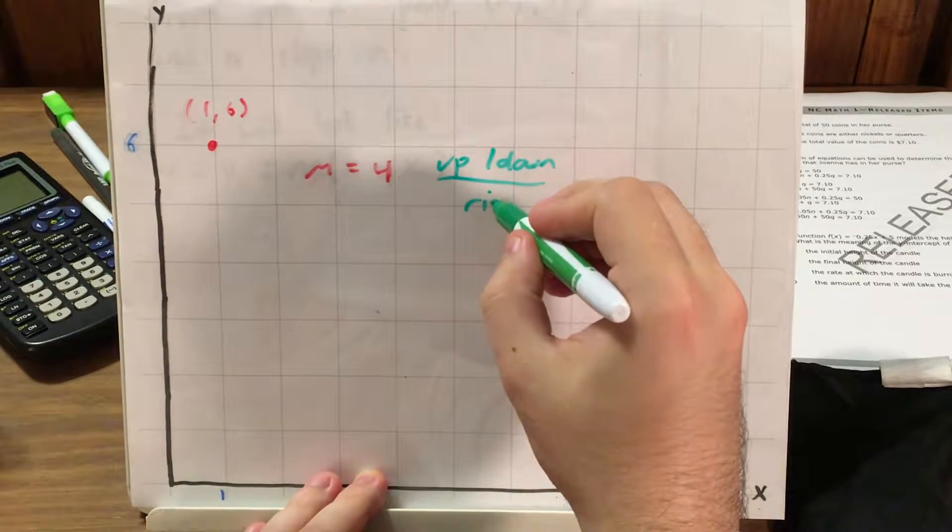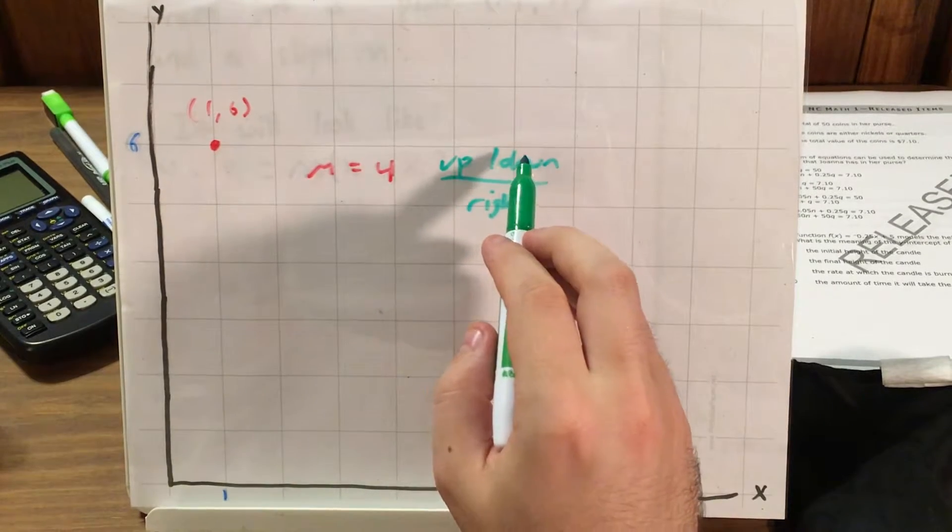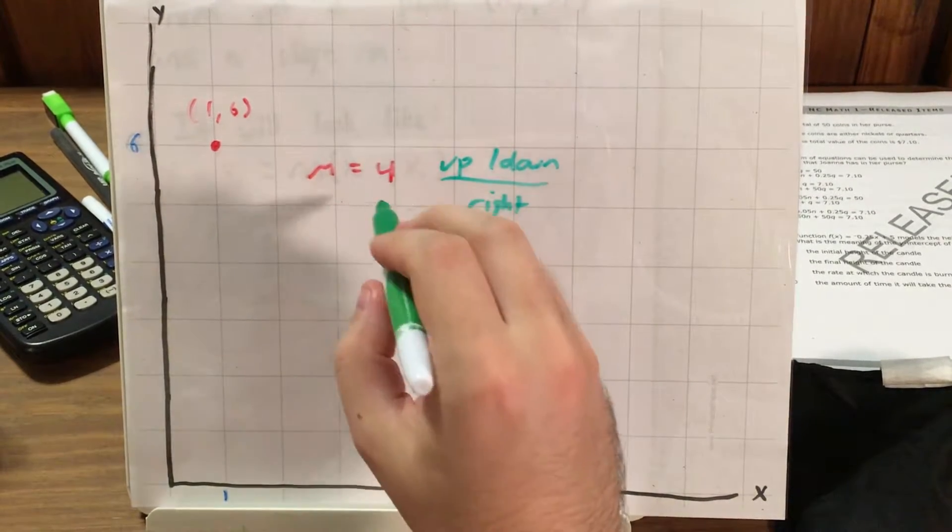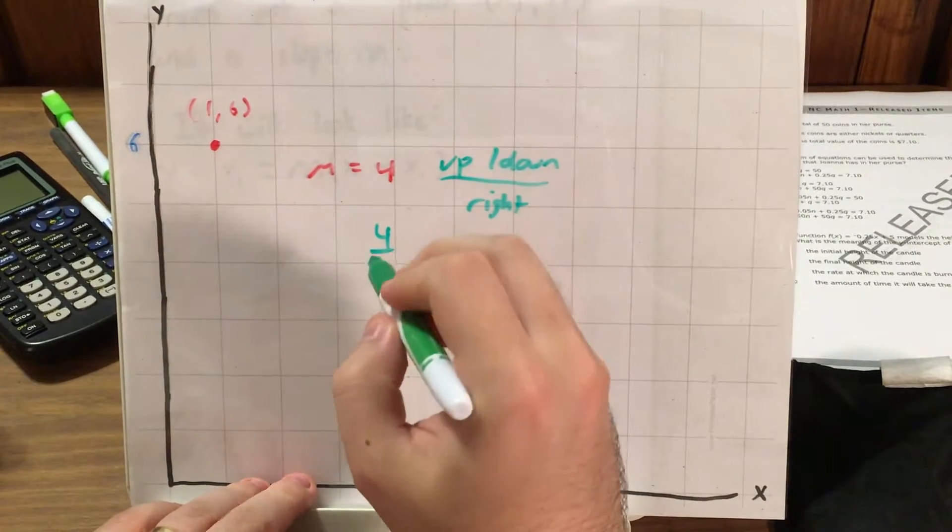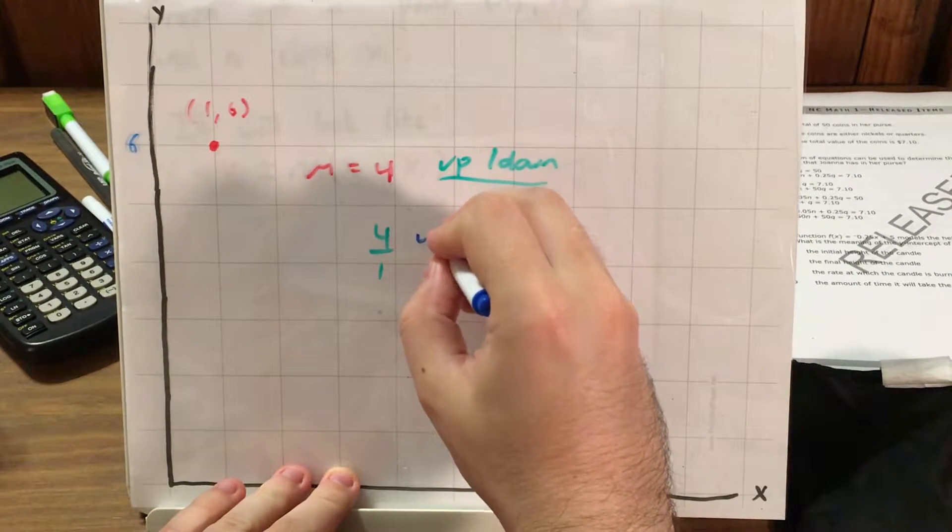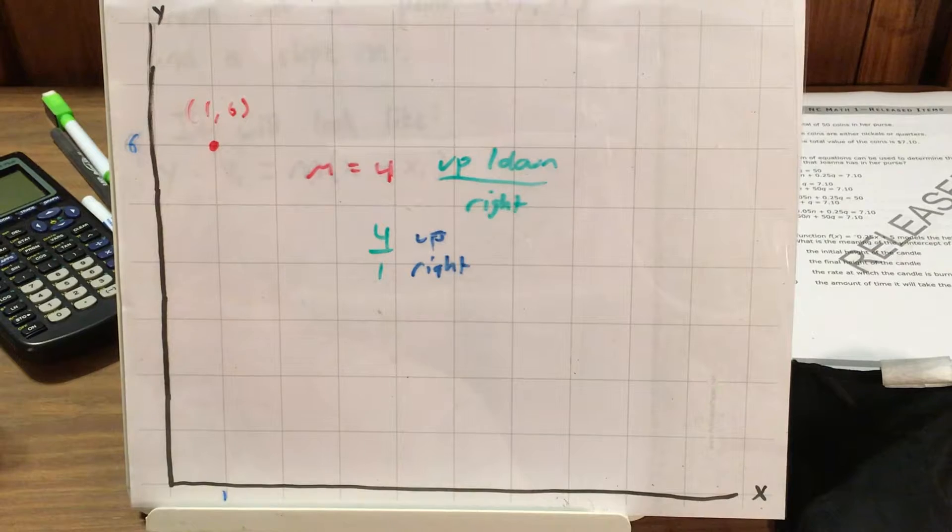and that's over how far right we're going. So if I see a slope of 4, I can write that as 4 ones, or 4 wholes, and this tells me that I'm going 4 up for every 1 square that I'm going right.